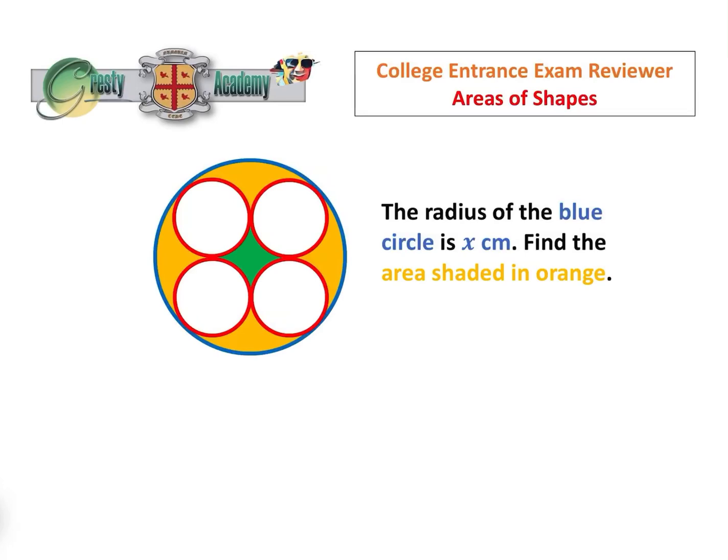This is a fantastic question for revising for college entrance exams on areas of shapes. We're given that the radius of the blue circle is x centimetres and we need to find the area shaded in orange.